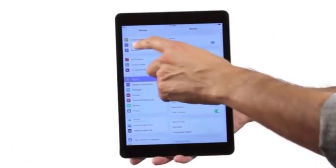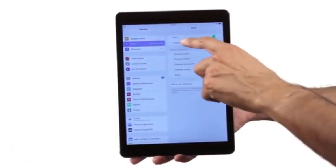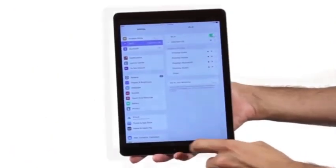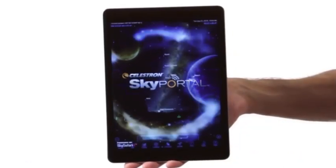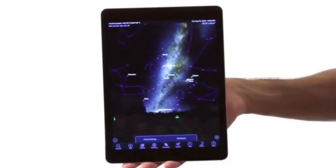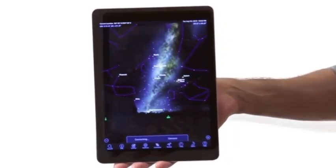Simply connect AstroFi to the free SkyPortal Planetarium app from Celestron. Align the telescope by centering any three bright stars in the eyepiece and you're observing in minutes with your iOS or Android smart device.